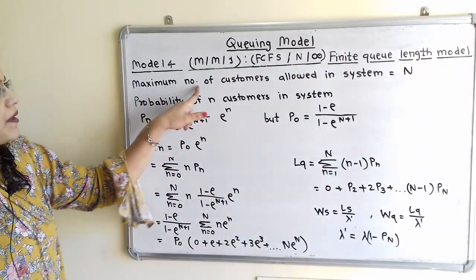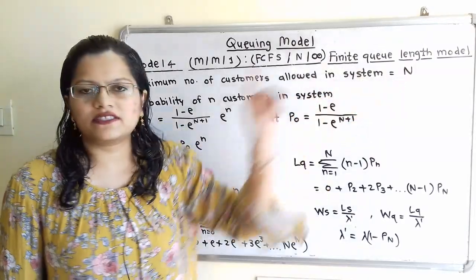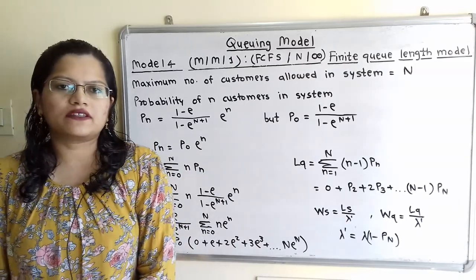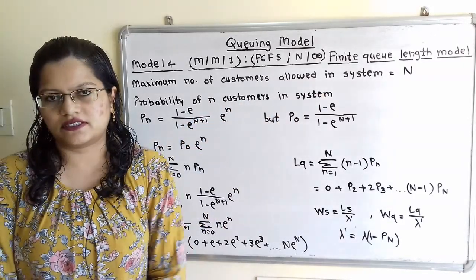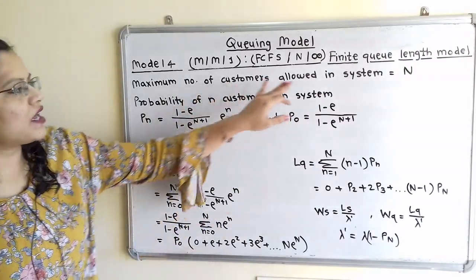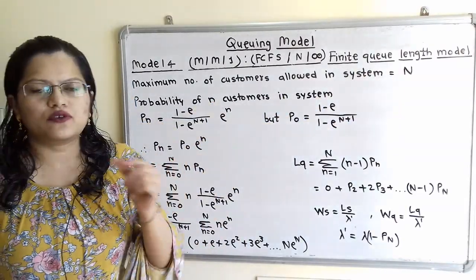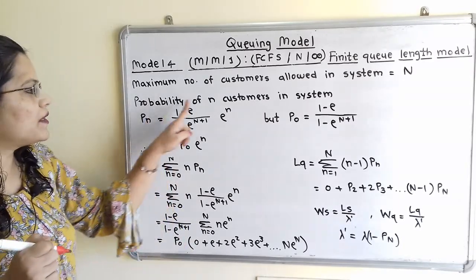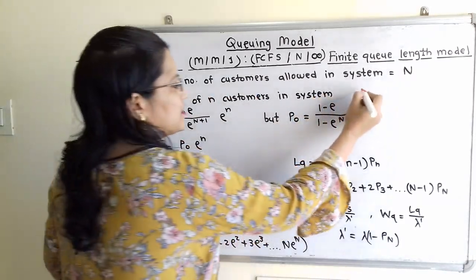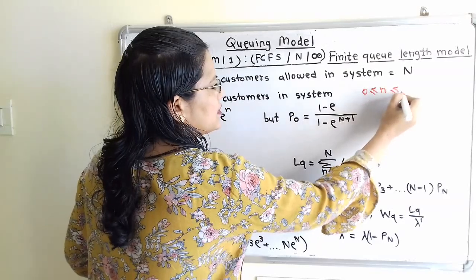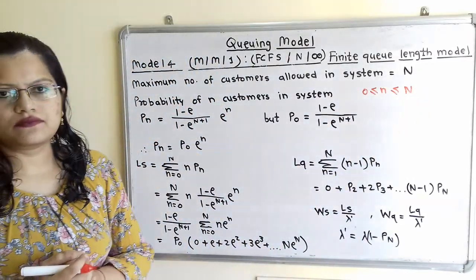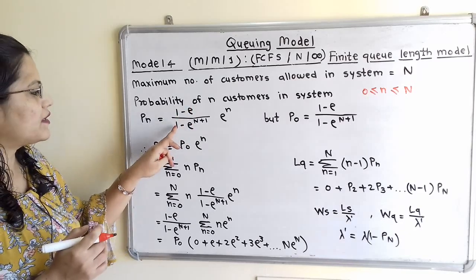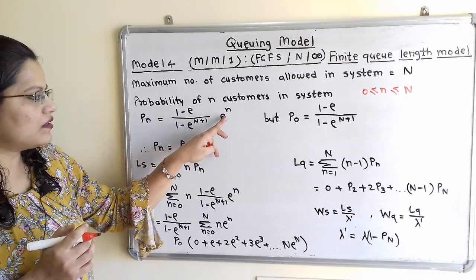For this model, the maximum number of customers allowed in the system is capital N, which is constant. The probability of n customers in the system, P(n), is defined for 0 ≤ n ≤ N. The formula is: P(n) = [(1 − ρ) / (1 − ρ^(N+1))] × ρ^n. Here capital N is constant (given in the question), while small n is variable, ranging from 0, 1, 2, up to N.